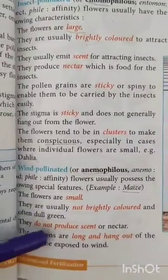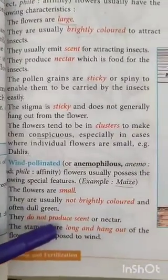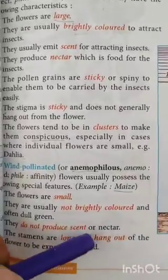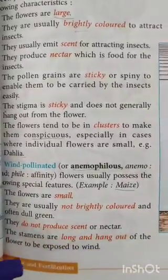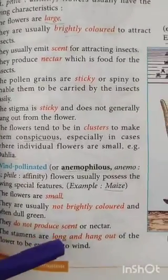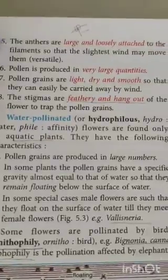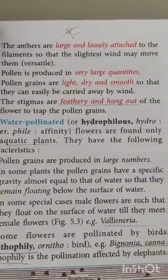The stamens of such flowers are long and hang out of the flower. The anthers are large and loosely attached, so that even a slight wind causes the pollens to spread out and scatter easily.